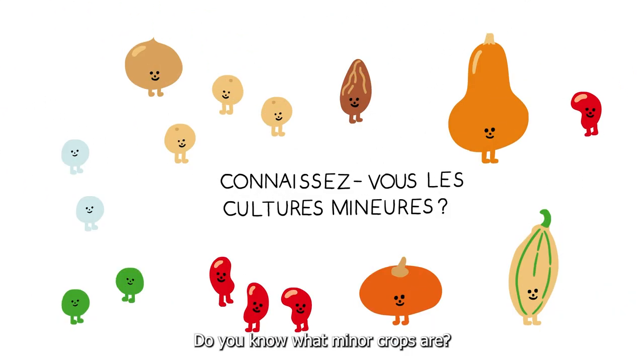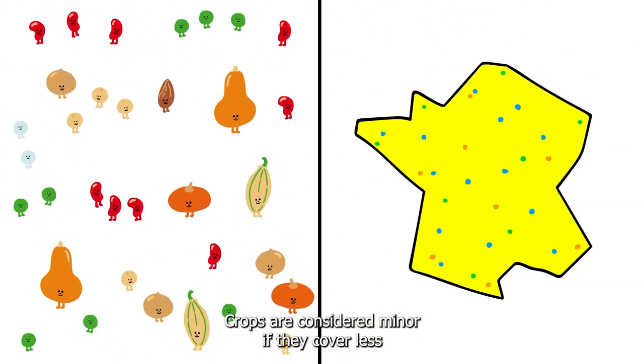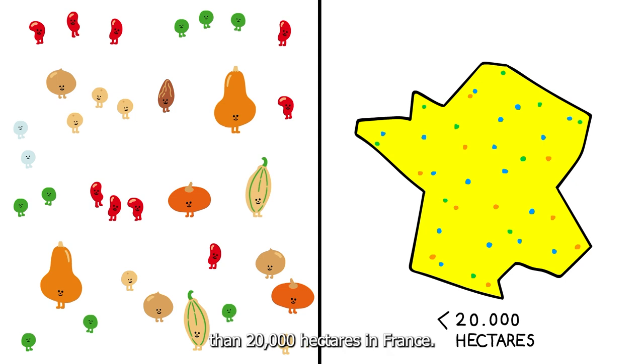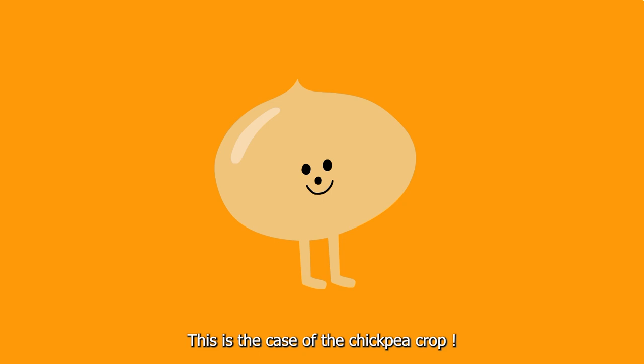Do you know what minor crops are? Crops are considered minor if they cover less than 20,000 hectares in France. This is the case of the chickpea crop.